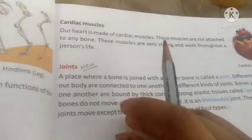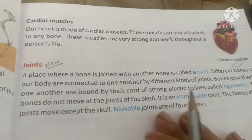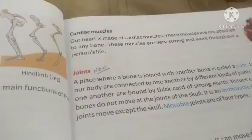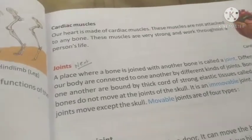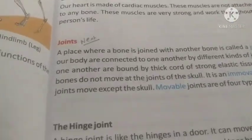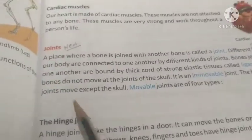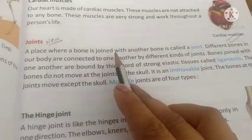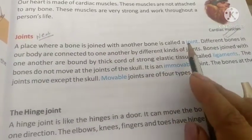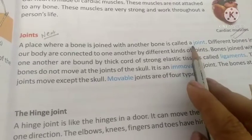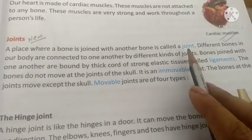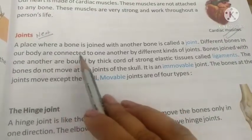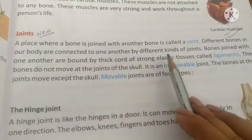Now we will study the first topic: joints. When two bones meet, it becomes a joint. A joint is where one bone is joined with another bone. Different bones in our body are connected to one another by different kinds of joints.